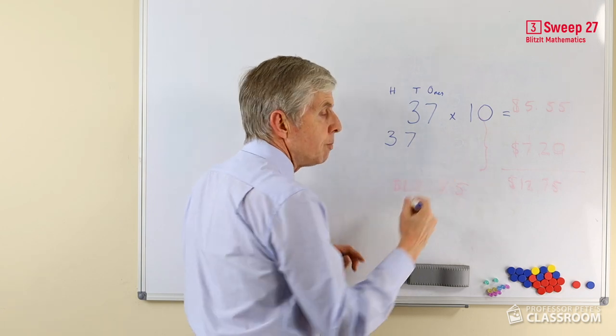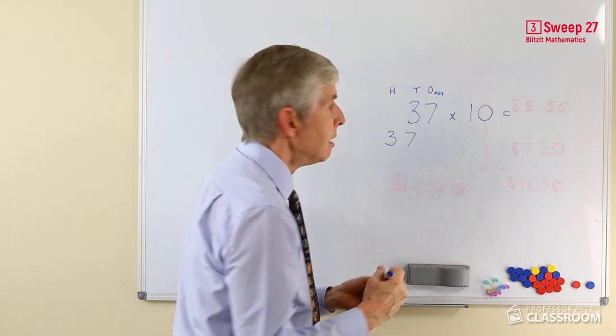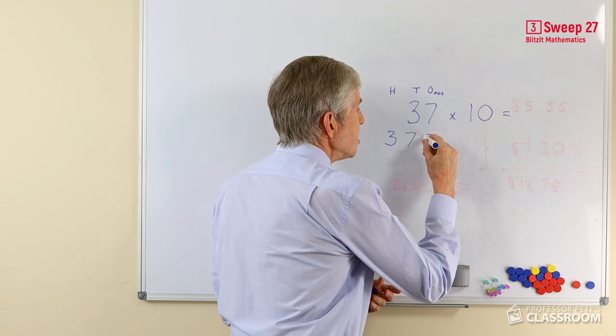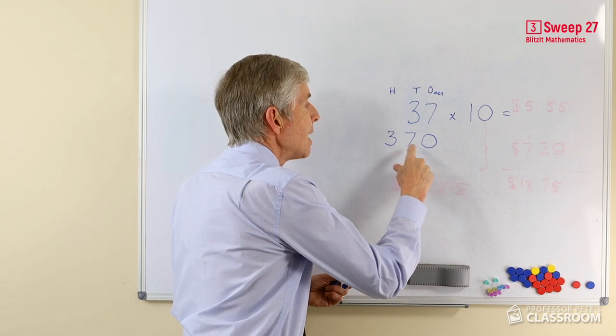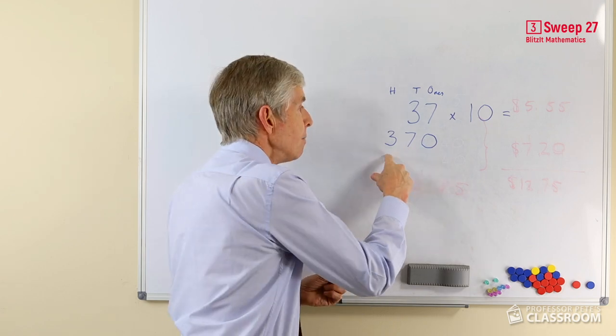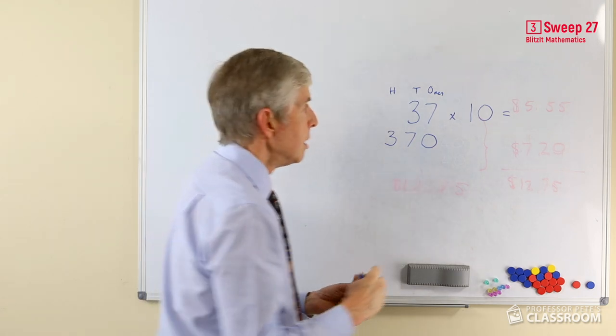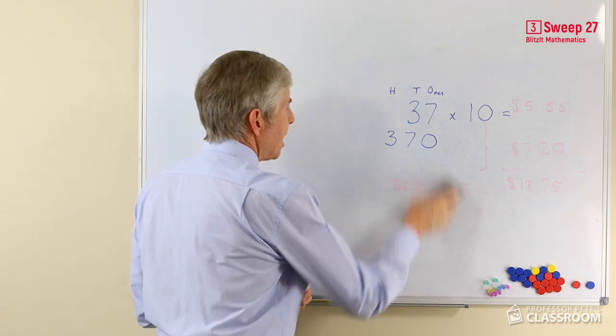It could be any digit, but in this case we've got no other digits. So it will be a zero to hold that place. Now we have 0 ones, 7 tens, and 3 hundreds. So there's the answer.